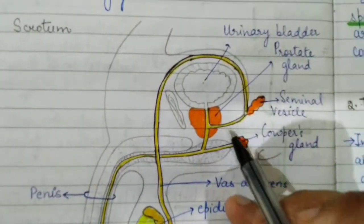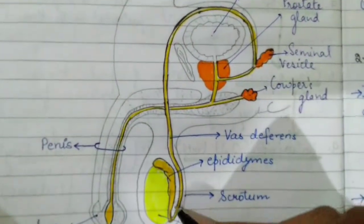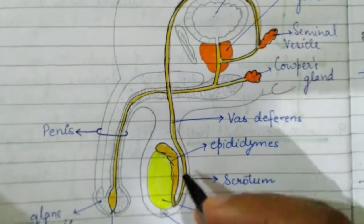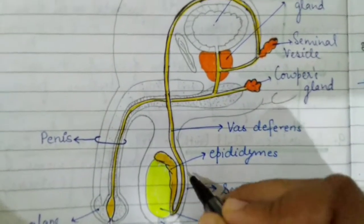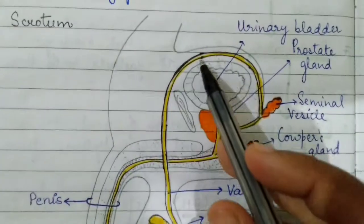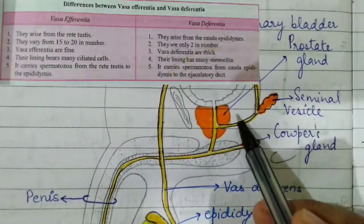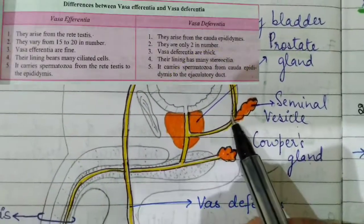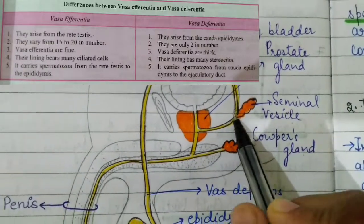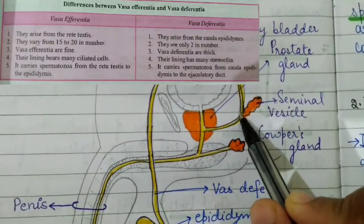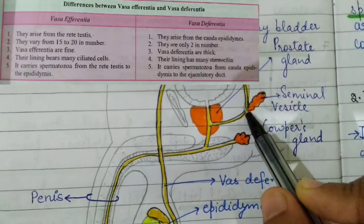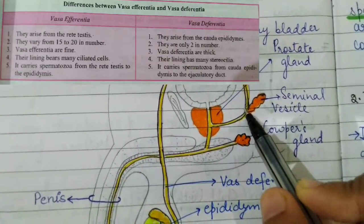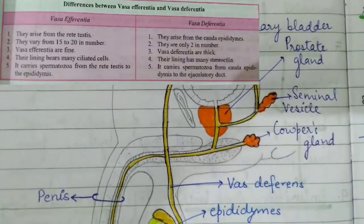Looking at another diagram, we can see the epididymis and the vas deferens leading to the ejaculatory duct. I hope the differences between vasa efferentia and vasa differentia are now clear. Please like, subscribe, share, and comment.